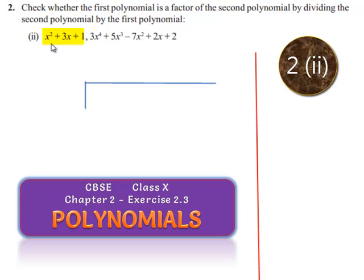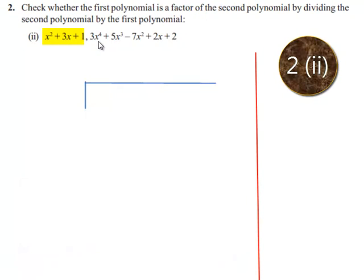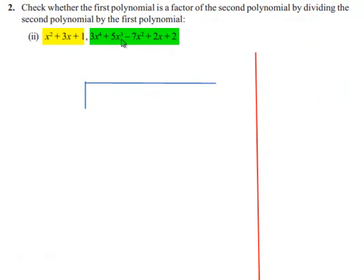The second polynomial given to us is x squared plus 3x plus 1, and the other polynomial is 3x to the power 4 plus 5x cubed minus 7x squared plus 2x plus 2. Since we need to divide the second polynomial by the first polynomial, the first polynomial becomes the divisor and the second polynomial becomes the dividend.